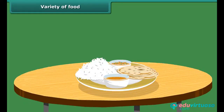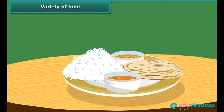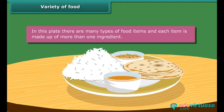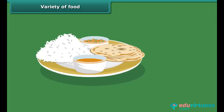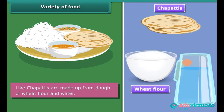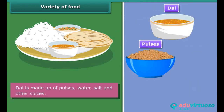Variety of food — hey, look at the food. What did you notice? In this plate there are many types of food items, and each item is made up of more than one ingredient. Like chapatis are made up from dough of wheat flour and water. Similarly, dal is made up of pulses, water, salt and other spices.